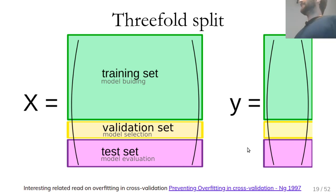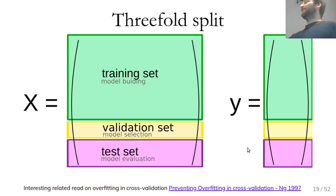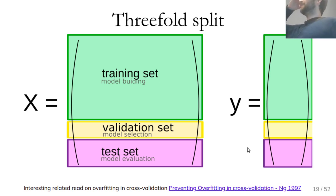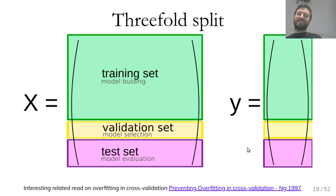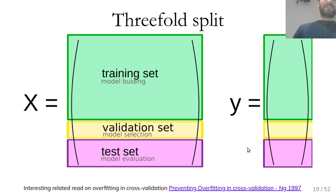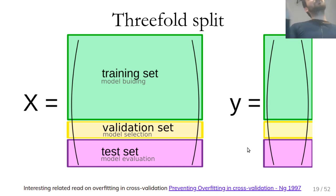What people usually do is split the data into three parts: training, validation, and test. Use the training set to build models, the validation set to pick the best hyperparameter settings, and the test set to evaluate how well the final model performs. Ideally, you use the test set exactly once at the end.